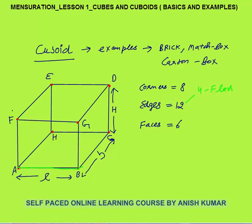There are 4 edges on the top: FG, GD, DE, and EF. And 4 edges act as the pillars of this building: AF, BG, CD, and HE. These are not standard notations — I am writing them for convenience so that you understand the basics of a cuboid.